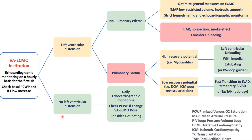This is a simple algorithm for managing VA ECMO while watching for left ventricular distension. If there is no left ventricular distension, daily monitoring and checking pulmonary capillary wedge pressure with increasing ECMO dosing is recommended. If there is distension but no pulmonary edema, optimize general measures such as inotropic support, volume restriction, and maintaining the lowest perfusing MAP. If there is aortic regurgitation, no ejection, or smoking effect, we should consider unloading.